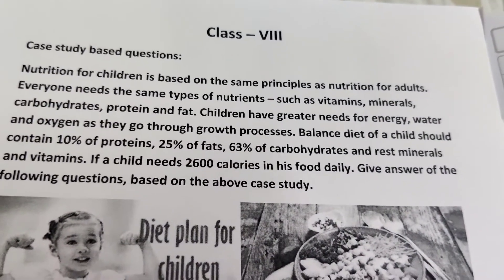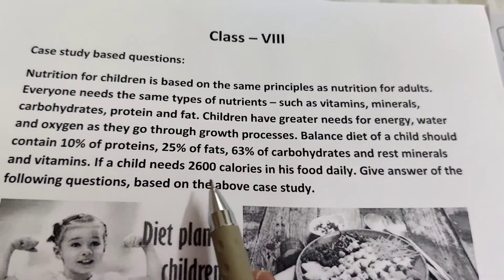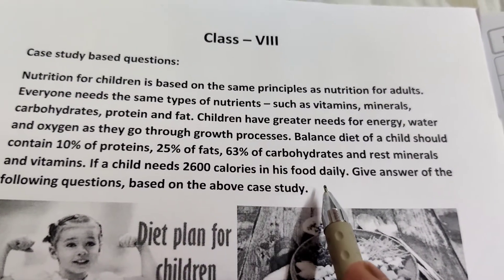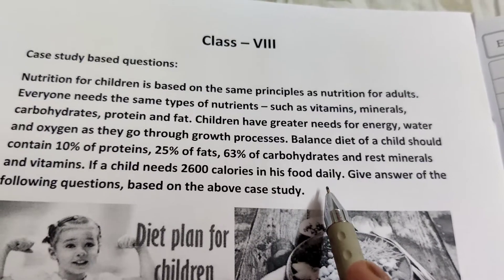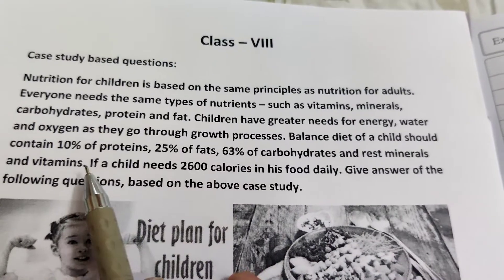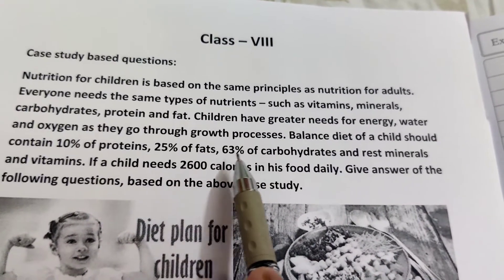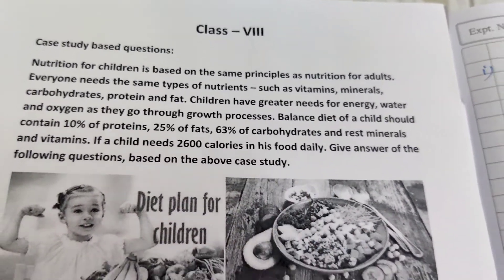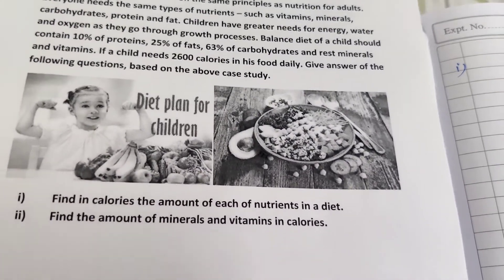If a child needs 2600 calories in his food daily, give answers to the following questions based on the above case study. 10% proteins, 25% fat, 63% carbohydrates. Now the question: find the calorie amount of each of the nutrients in a diet.